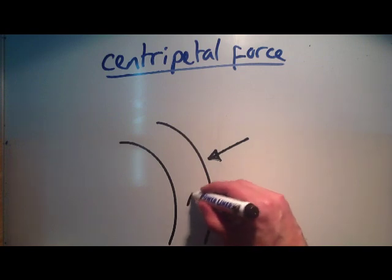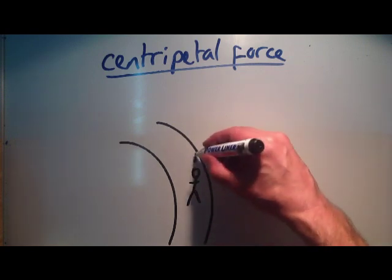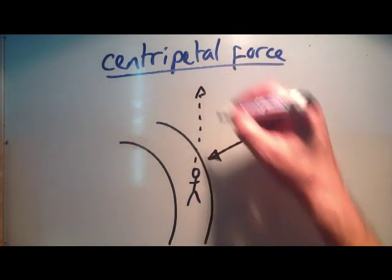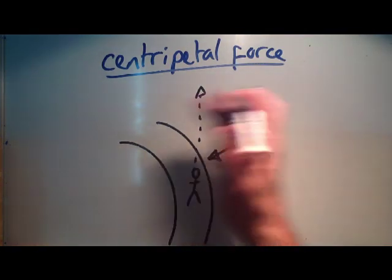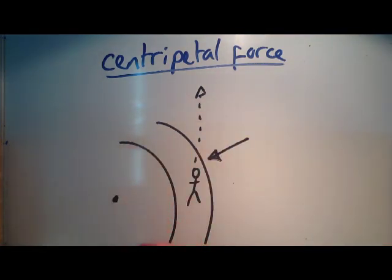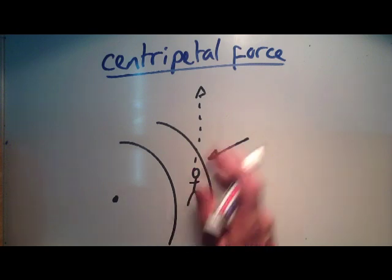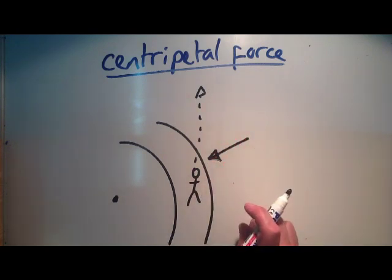However, when we are sat in our car, we are trying to travel forwards in this motion. So what happens is, as our car moves inwards to the left towards the centre of the circle, which is there, we will hit the outside right of the car, or the car will hit us, rather.